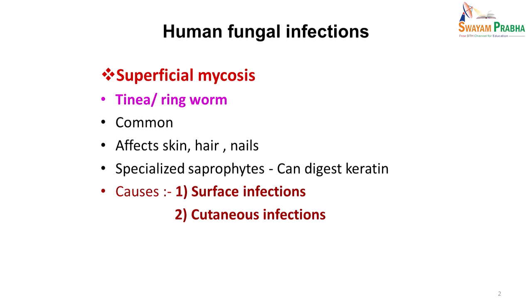What is mycosis? Mycosis is the disease caused by fungi. Superficial mycosis is what we will talk about today, which mainly comprises tinea and ringworm, which are common infections. They affect skin, hair and nails, and these are mostly caused by fungi which are specialized saprophytes — that is, they can digest keratin.